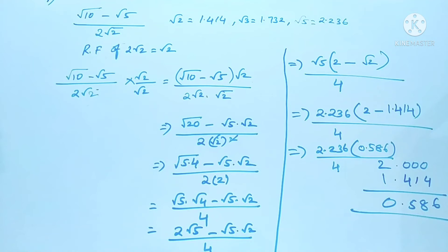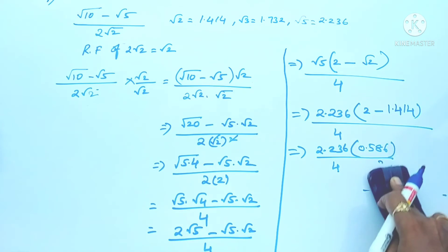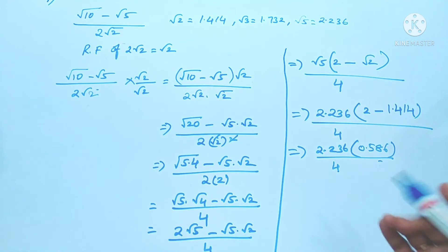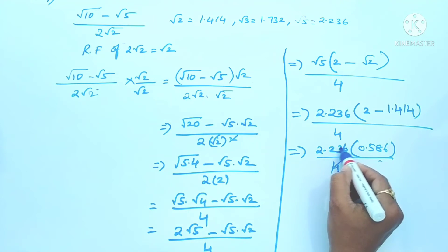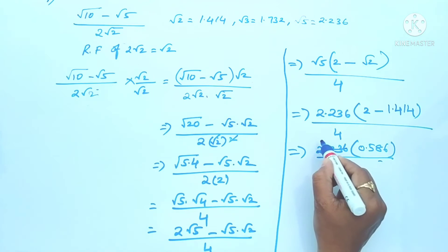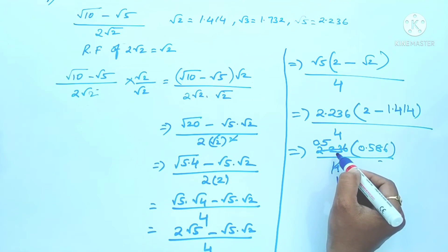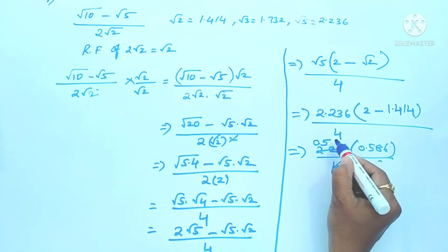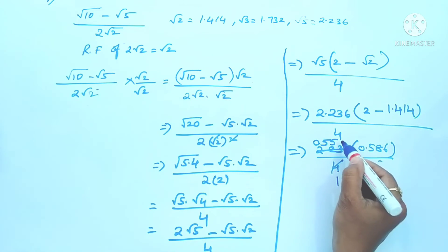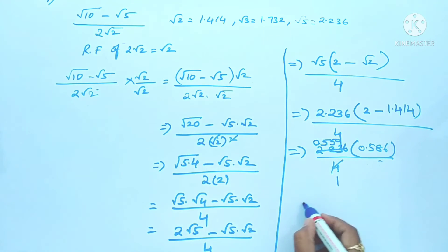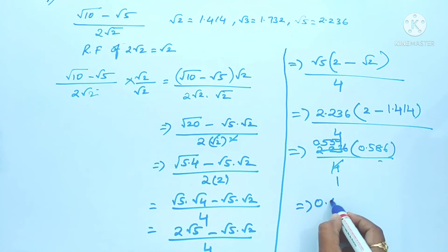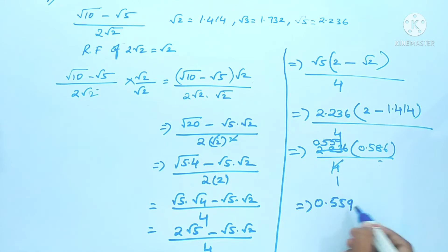Now we cancel with 4 using divisibility rules. Dividing 0.586 by 4: 4 goes into 20 five times (0.1×4=0.4... ), step by step: 4 into 5 is 1 remainder 2, 4 into 24 is 6, so 0.586 / 4 ≈ 0.1465. Actually the result after dividing gives 0.559... So we have 2.236 × 0.1465 to compute, or equivalently 2.236 × (0.586/4).